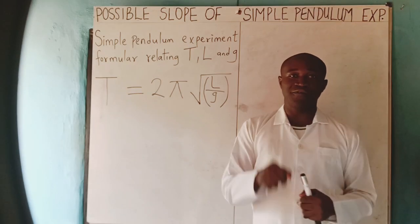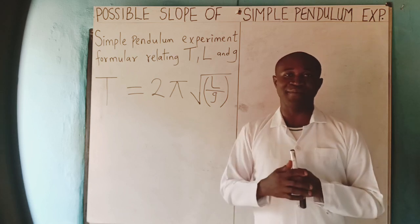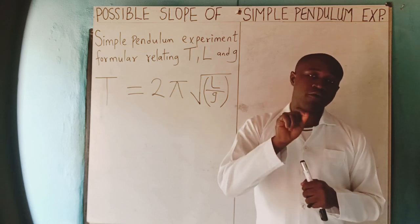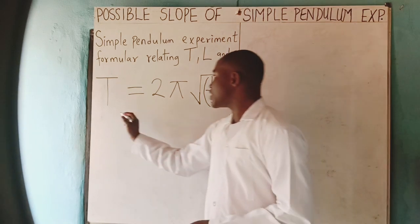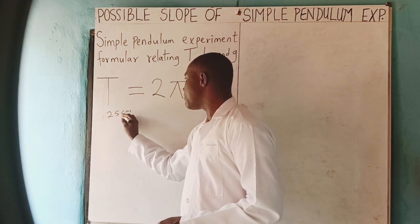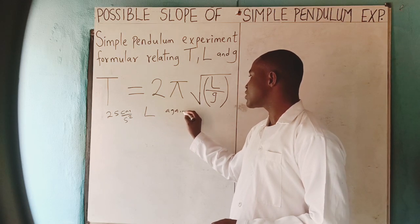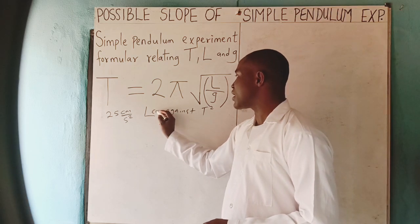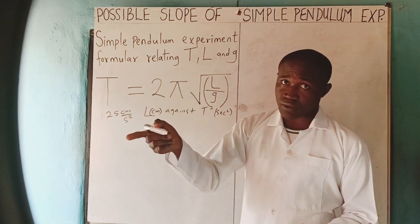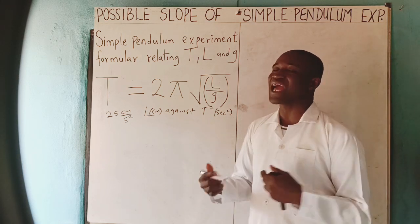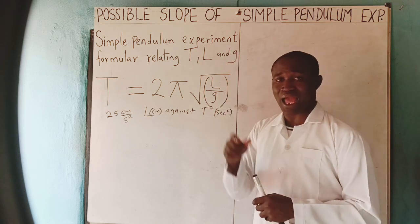Welcome to today's class. In this video I want to discuss something else, and that is possible slopes you can get from simple pendulum experiments. If you check our channel, you will notice that we uploaded an experimental simple pendulum video where we discussed everything. You will also notice that we got a slope of 25 centimeters per second squared, because what we did there is plot a graph of L against T squared — L in centimeters against T squared in seconds squared. We got that slope and solved the error in the slope as well. Now in this video we want to see how you can verify whether your slope is correct.